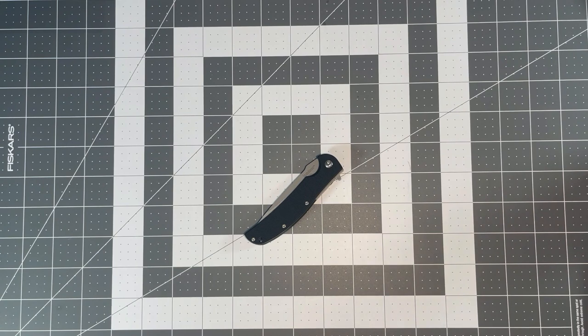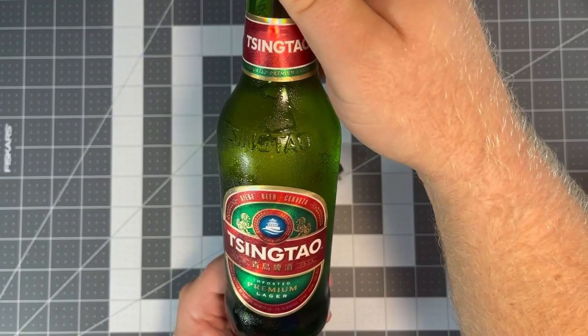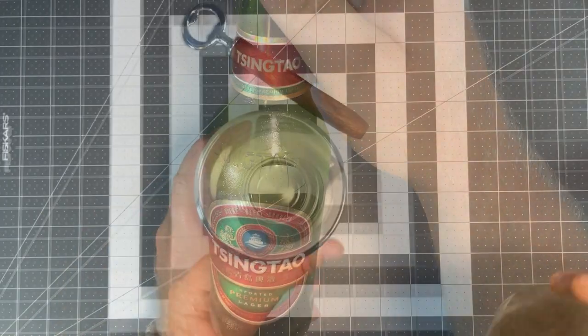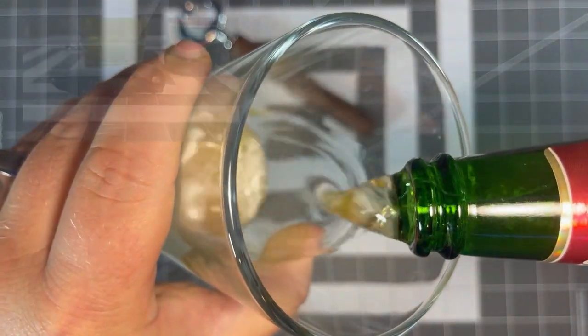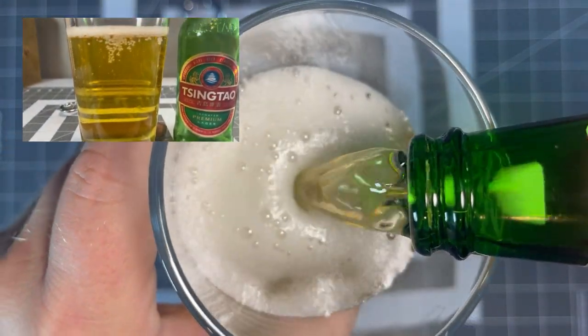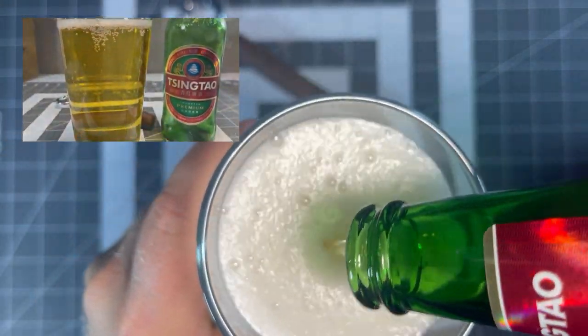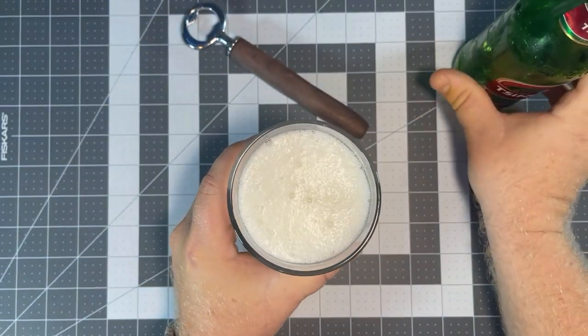But let's get into the star of the show here, the Kershaw Chill. Today I'm going to be pairing it with Sing Tao Premium Lager from China because that's where this knife is made. And I'm excited to try this one. I've had this in the fridge for a couple weeks. Not sure what I was going to pair it with, but I've been wanting to try it. So today's the day. So let's get into the knife review.